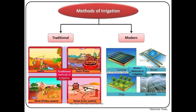The different sources of irrigation are wells, tube wells, ponds, lakes, rivers, dams and canals. The methods of irrigation are broadly classified as traditional and modern. Traditional methods include diltli, chain pump, mod or pulley system, and rahat lever system. Modern methods include the sprinkler system and drip system.